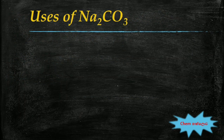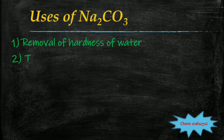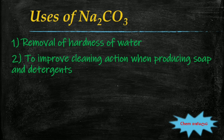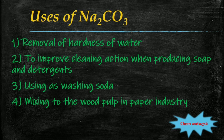Sodium carbonate is a raw material required for a number of chemical industries, and presently about 20 million metric tons of sodium carbonate are annually produced in the world. It is used to remove hardness of water, to improve cleaning action of soap and detergents, and it is used as washing soda. It is also mixed with wood pulp in the paper industry, and sodium carbonate is used in the production of glass.